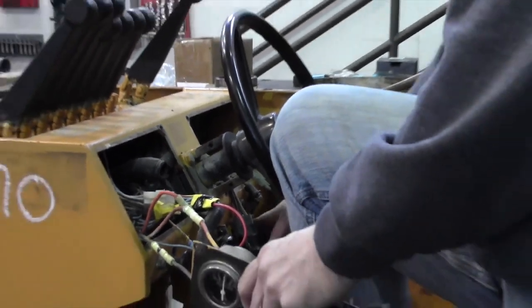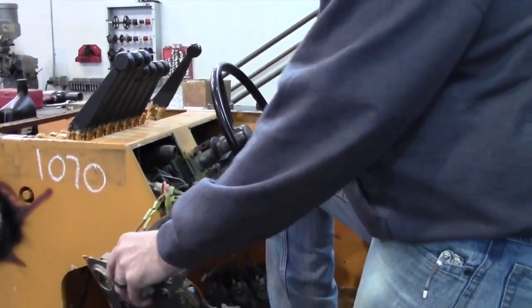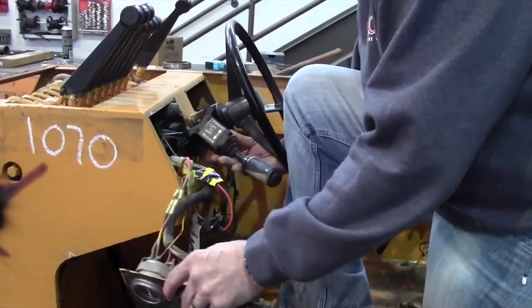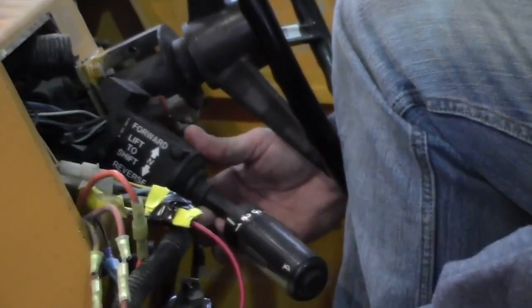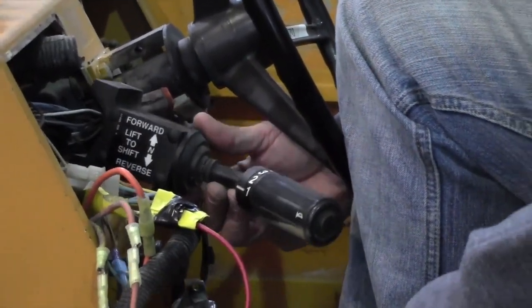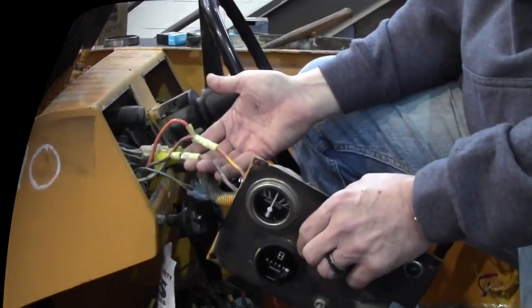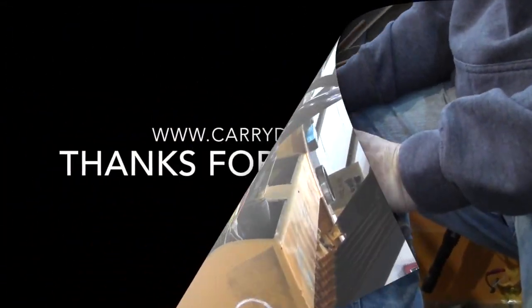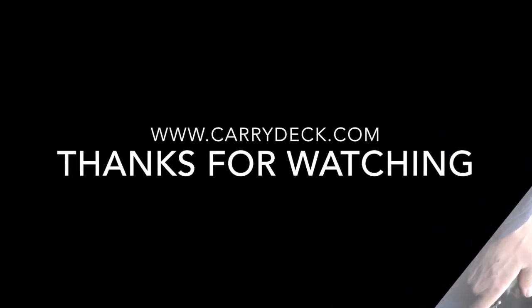It can short out the $1,600 shifter, which we've seen happen, and which is hooked to solenoids and relays on your transmission because it's an electric transmission. This type of stuff can cause you all kinds of problems, so you want it to be addressed. All right, thanks for watching.